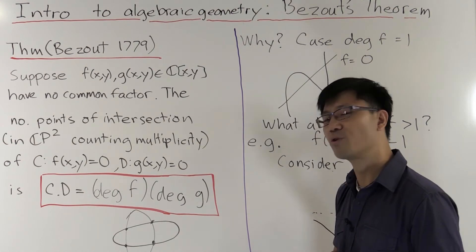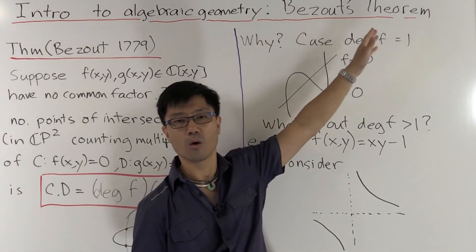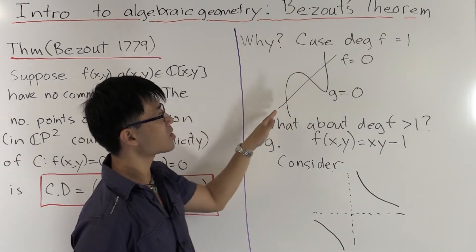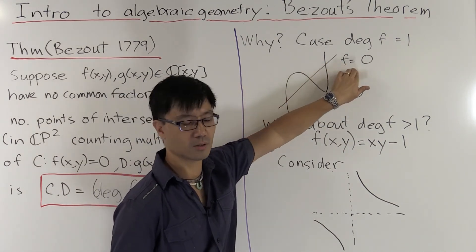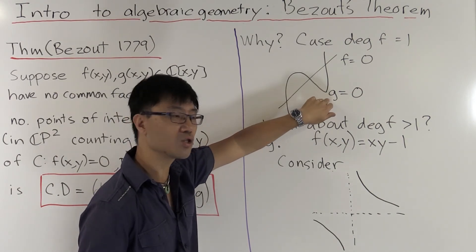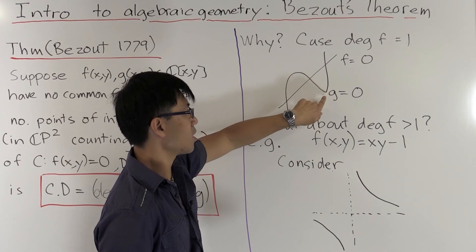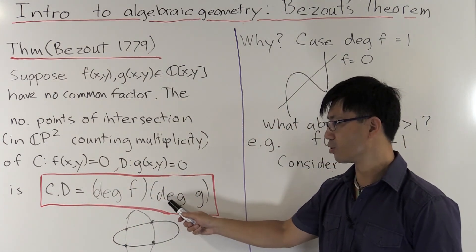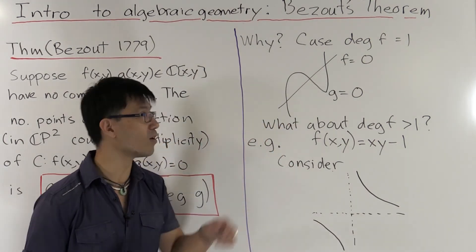Why is this true? The easiest case is when one of the polynomials has degree one — suppose that's F, in which case its zero set is just a line. Since F is linear, you can use one variable to eliminate the other, and you're left solving one polynomial equation in one unknown. Since that polynomial has degree d — the degree of G — the number of intersection points is just deg(G), which equals deg(G) times one, the degree of F.